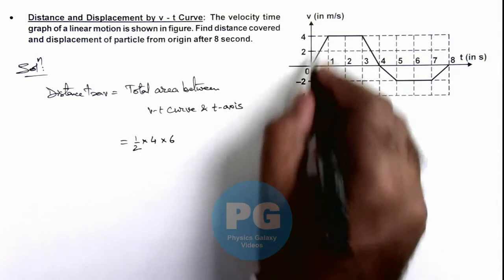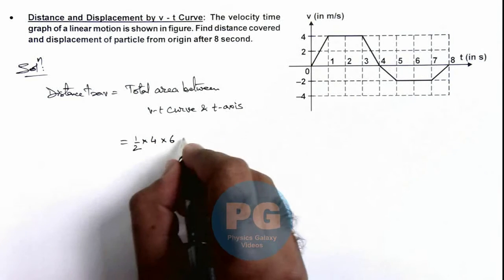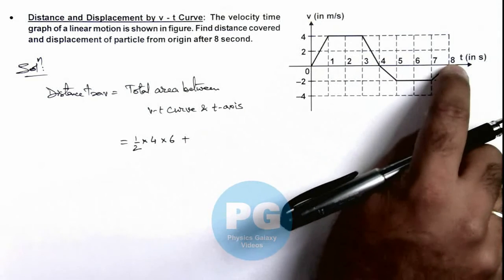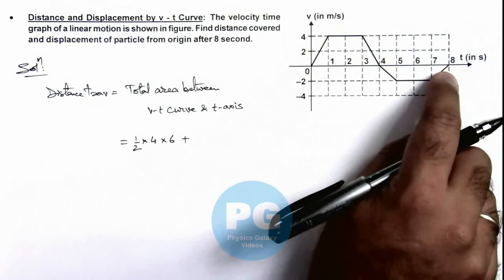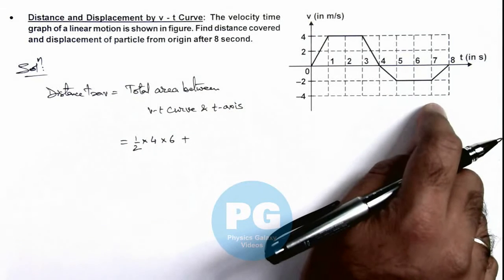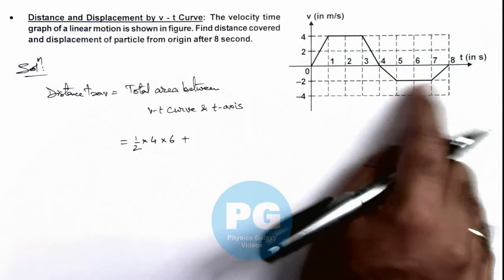This is the area of the first trapezium. For the second trapezium we can add the area. This area would be negative because the velocity is negative, but in case of distance we always add up all distances travelled by the particle.